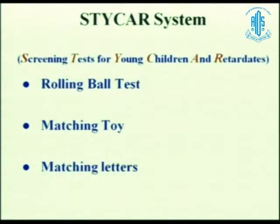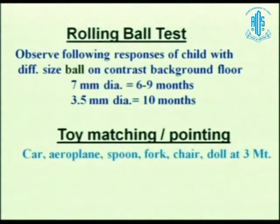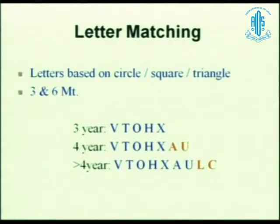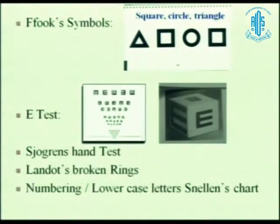In the rolling ball test, very small balls are thrown towards the child — if they are able to hold it, it means they can see it. There is a 7mm diameter ball for 6 to 9 months. For letter matching in the Stycar system, it could be circle, square, or triangle at 3 to 6 meters. These letters are used for 3-year-olds; more letters are added at 4 years and even more at above 4 years to reduce the chance of guessing. There are also Ffooks symbols: triangle, square, circle, square. Then there is the illiterate E-test, Jogren's hand test, and broken ring — there are innumerable kinds of tests available.